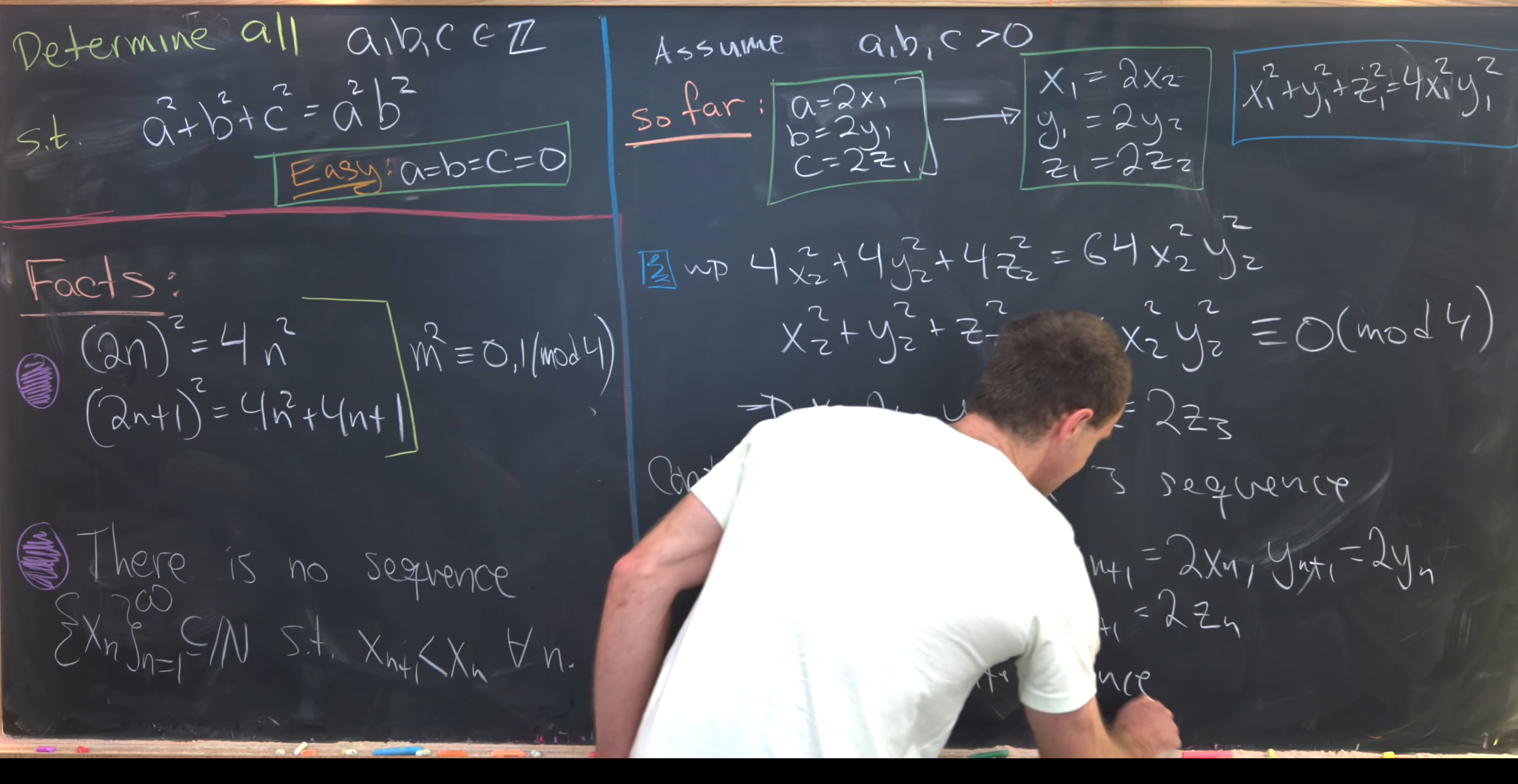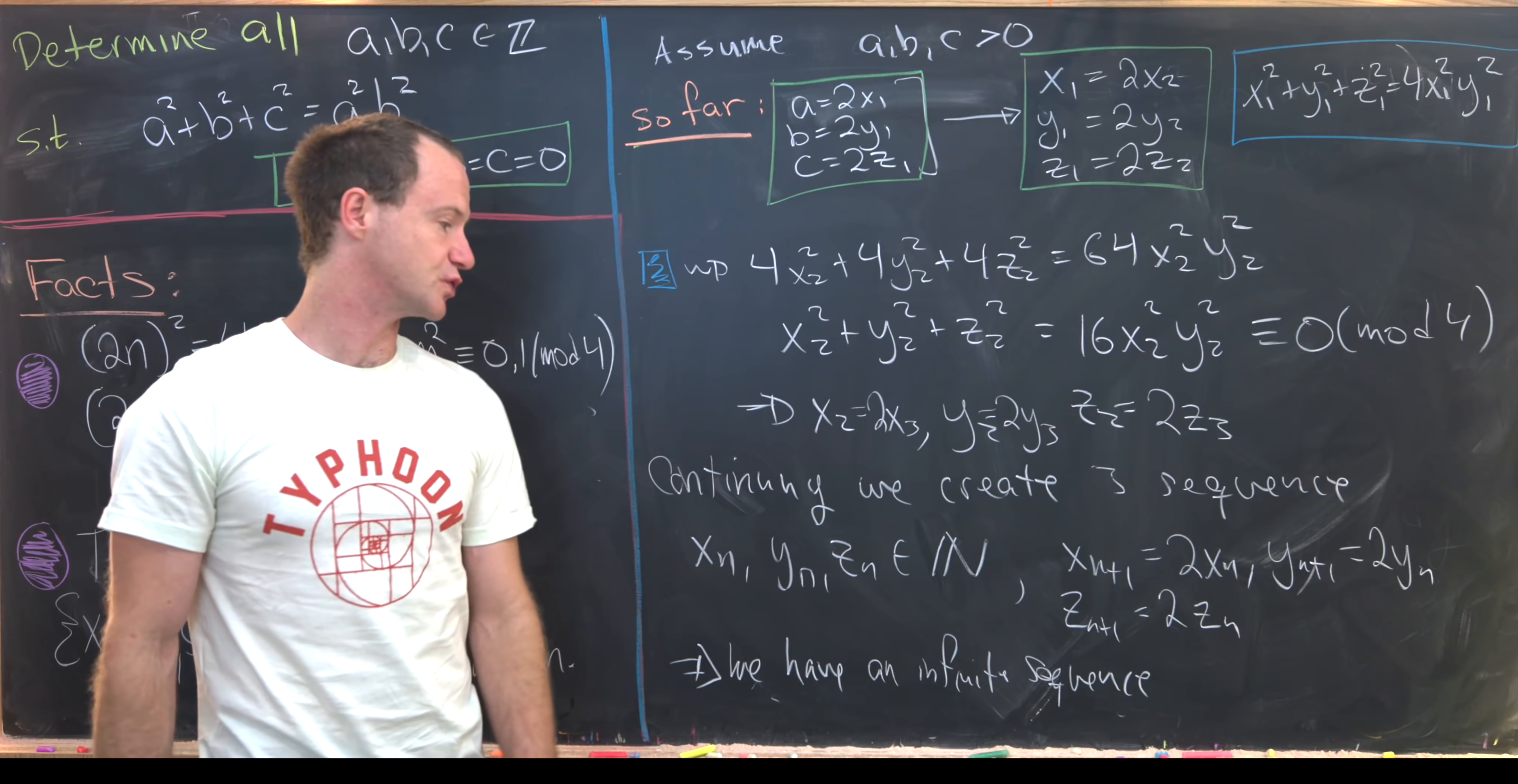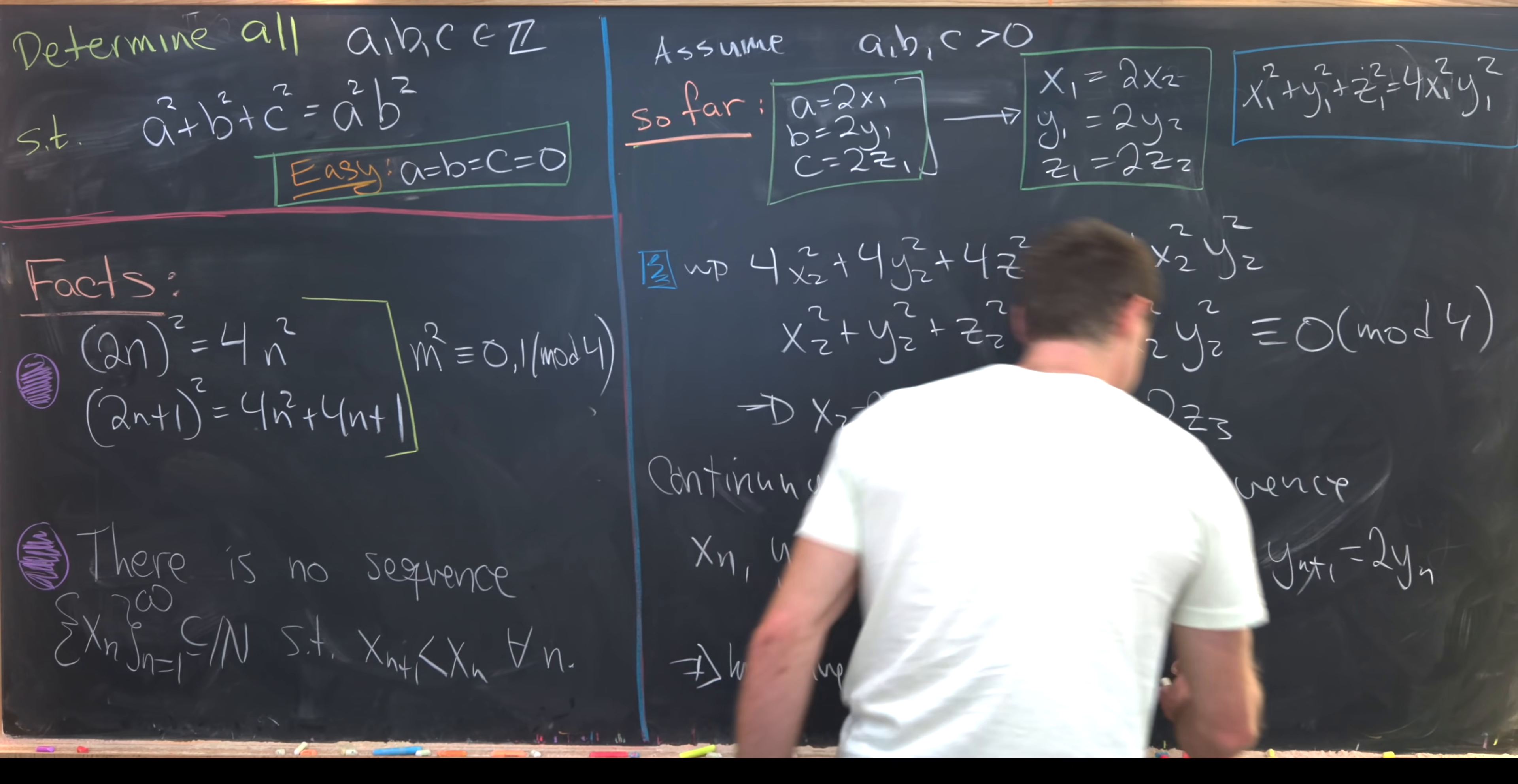We, in fact, have three infinite sequences, but we might as well just use one of them. So we have an infinite sequence xₙ, which is a subset of natural numbers...